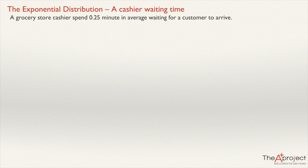A grocery store cashier spends 0.25 minutes on average waiting for a customer to arrive. We are going to assume that this waiting time follows the exponential distribution, and with that information, we want to answer the following questions.